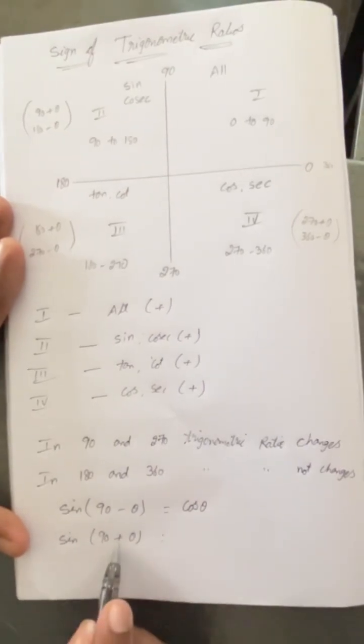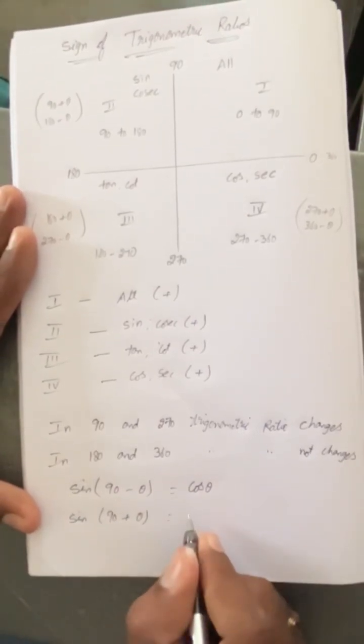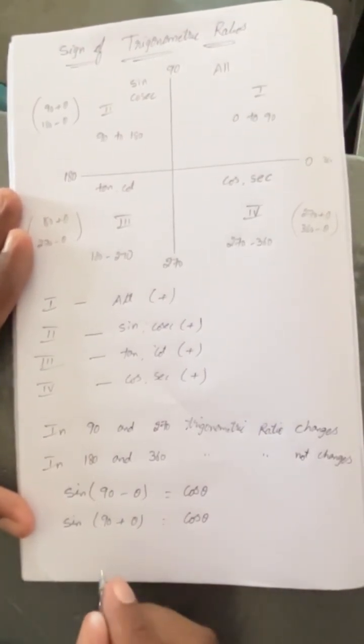Sine of 90 minus theta: 90 minus theta lies in first quadrant and sine is positive, so cos theta. Sine of 90 plus theta: 90 plus theta lies in second quadrant, that is also cos theta.